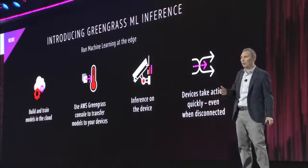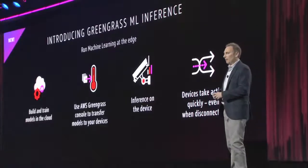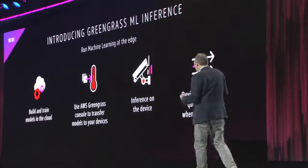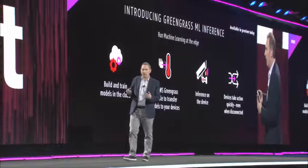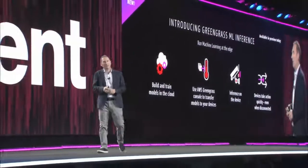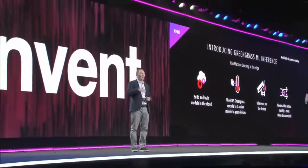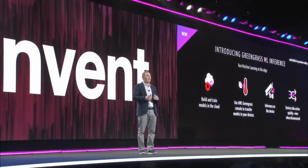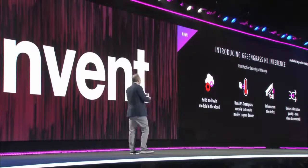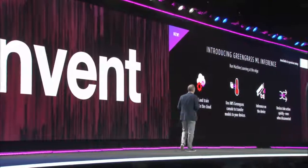And that's what ML Inference in Greengrass is going to enable you to do. We have a bunch of models you can use yourself, but I think most people will use SageMaker to build these models, and then you'll be able to send them over the air to the devices so they can make these inferences and predictions at the edge. A huge enabler to connect the ability to run machine learning at the edge.